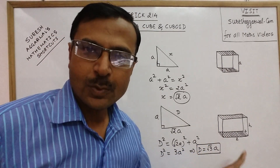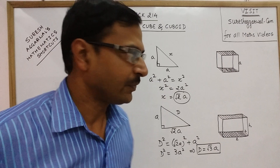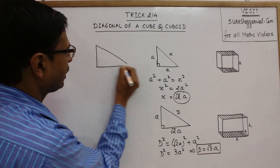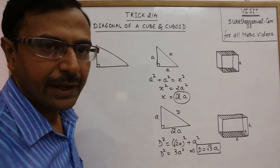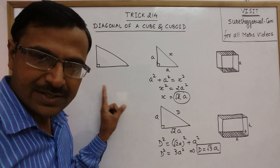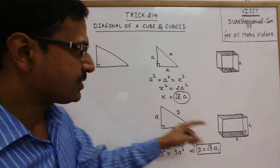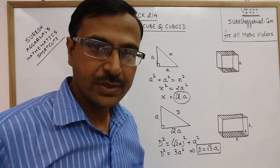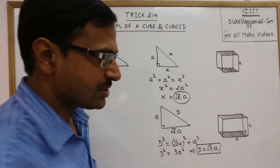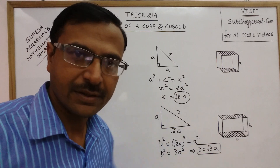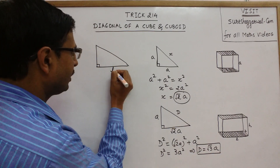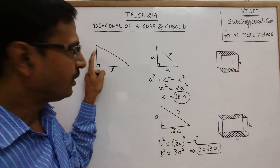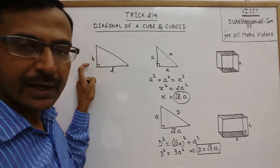Now let us repeat this procedure for a cuboid. I have drawn a right-angled triangle again. This time, since we have all three dimensions different, I will take the first two dimensions — length and breadth — taking the base as L and the perpendicular as B.